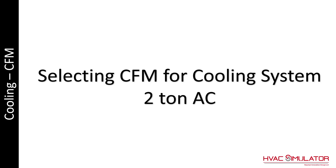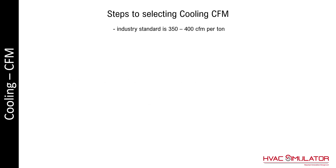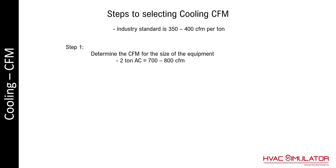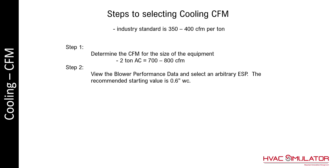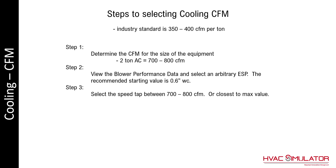A 2-ton AC will be used for this example. The steps to selecting cooling CFM: the industry standard is 350 to 400 CFM per ton. Step 1 is to determine the size of the equipment — this example is a 2-ton AC, therefore the CFM will be between 700 and 800 CFM. View the blower performance data and select an arbitrary external static pressure; the recommended starting value is 0.6 inches of water column. Select the speed tap between 700 and 800 CFM, or the closest to the max value.